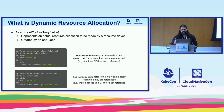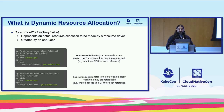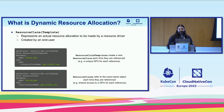Resource claims are the user-side analog to the resource class. A resource claim represents the actual resource allocation to be made by a resource driver as defined by the end user. They create these objects, refer to the resource classes they want, and when referenced inside a pod, resources get injected at runtime. Resource claim templates create a new resource claim on the fly each time they are referenced — giving a unique GPU per reference. A non-template resource claim always refers to the same object, enabling shared access.